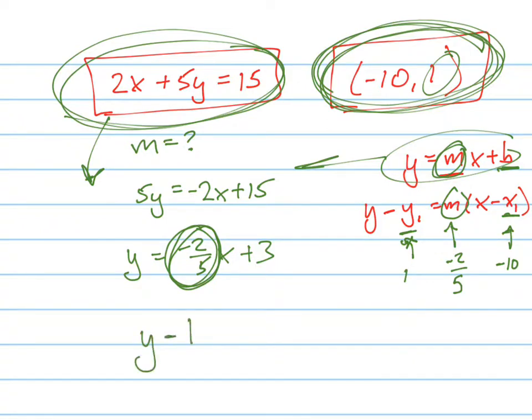y minus 1 equals negative 2 fifths times x minus a negative 10, which is what? Minus a negative is plus 10. And there's your equation.